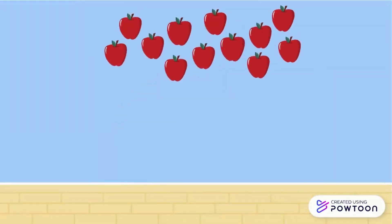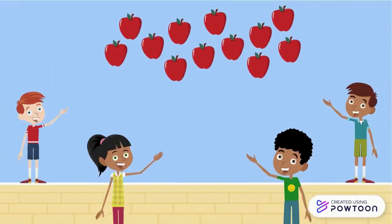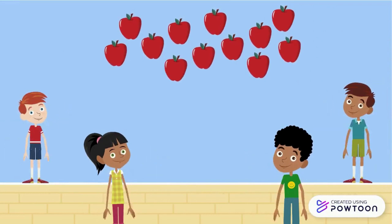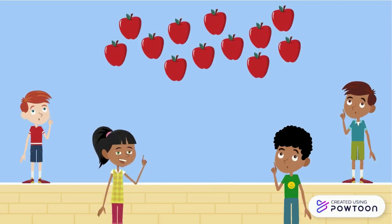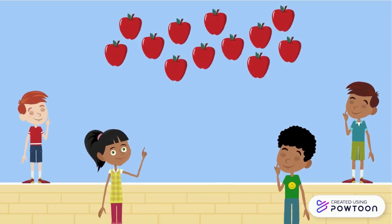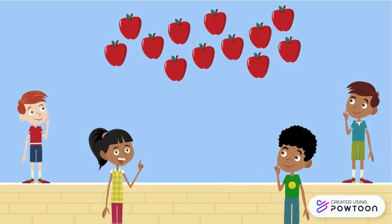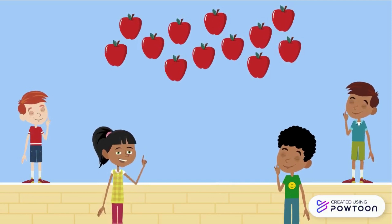Here are 12 apples. We want to share them equally between these four children. How many apples should each one have? First of all, you should know that sharing apples fairly means that we want to share them equally, which means that everyone will take the same number of apples.